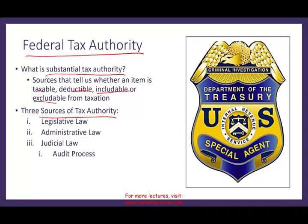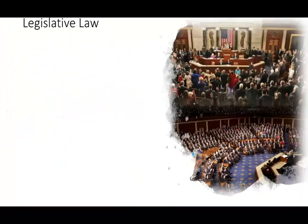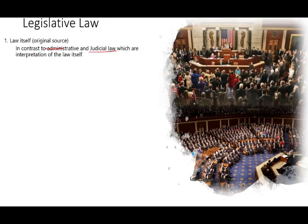I'm going to go over each one of these sections separately, and before we look at judicial law, we're going to look at the audit process so we can tie it to the judicial law. Starting with legislative law: legislative law is the law itself — the original source — in contrast to administrative and judicial law, which are interpretations of the legislative law.